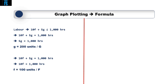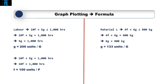We also follow the same idea with regards to material L. The formula is 4F plus 6G needs to be less than or equal to 800kg. Again, we are going to assume that we use the full 800kg and turn the formula into 4F plus 6G equals 800kg. If we assume we don't make any francs, the formula becomes 6G equals 800kg, and therefore G is 133 units of product greeter. Assuming we don't make any greeters, the formula becomes 4F equals 800kg, and we would therefore make 200 units of franc.